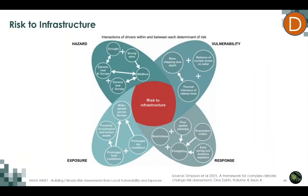We can take the same risk diagram—sometimes called a propeller diagram—and add more detail around specific assets at risk. Here is an example looking at risks to infrastructure that examines the drivers within each component of risk, each determinant of risk, and how they interact together in the broader risk framework. This type of mapping gets to the second level and beyond, and is very helpful as an exercise with stakeholders.